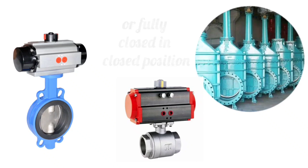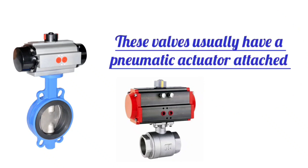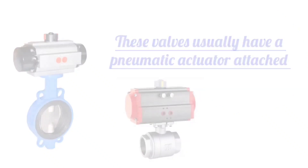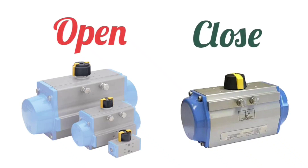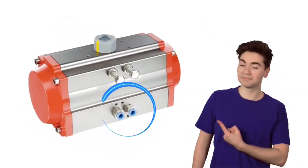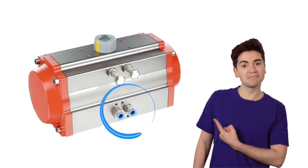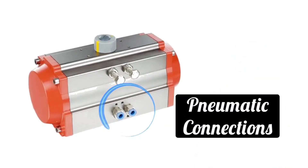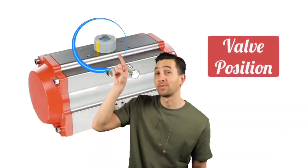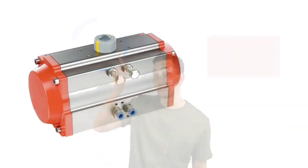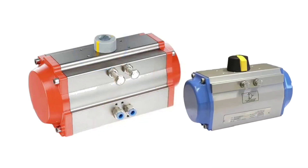These valves usually have a pneumatic actuator attached to them. In this pneumatic actuator, you can see the position of the control valve — whether it is open or closed. From here, pneumatic connections are made to open and close the valve. And above the actuator, you can see the position of the valve. By looking at the indication, you can easily identify whether the valve is open or closed.